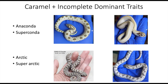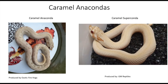So let's move on and show you what caramel looks like when combined with the incomplete dominant genes — the anaconda gene as well as the arctic. These are just general pictures so you can see what they look like: the anaconda, the superconda, the arctic, and super arctic. This right here is when you combine caramel with the anaconda gene, which reduces the pattern. On the left you have a very high contrast caramel anaconda, and on the right you have the caramel superconda without the pattern along its body.